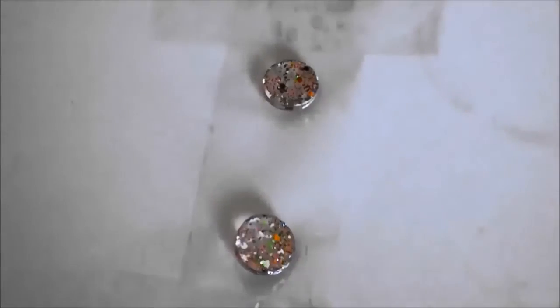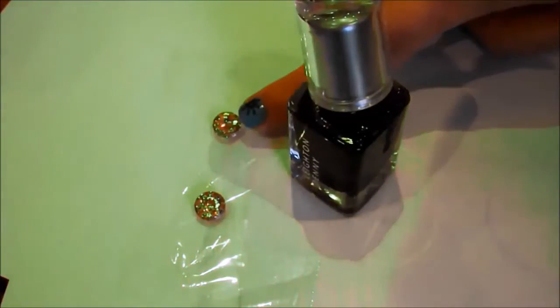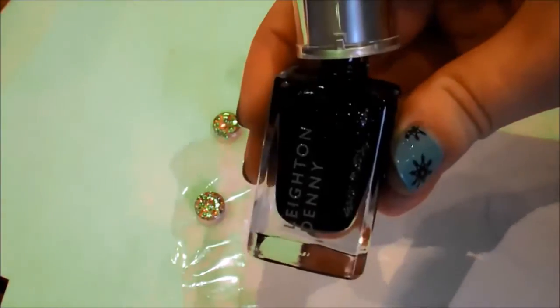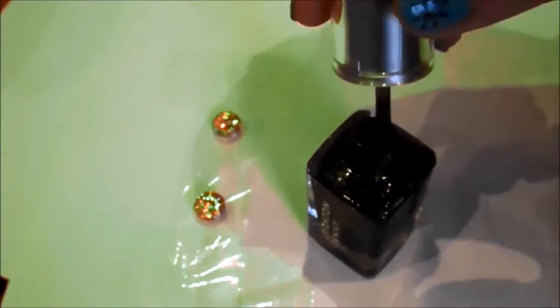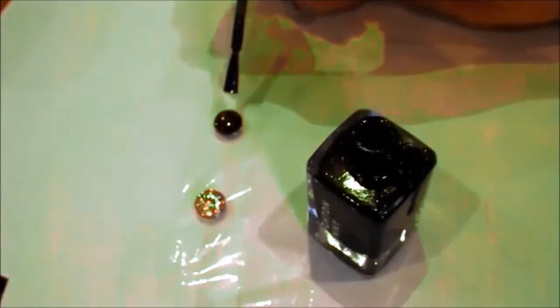Once that's dry, you're going to want to go in with your black nail polish to really help make the glitter sparkle and stand out. So one thin coat on both of the glass gems and wait for it to dry.